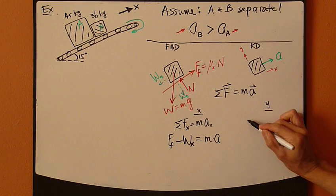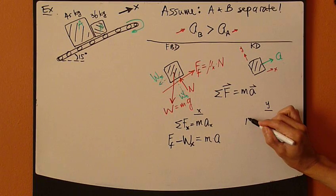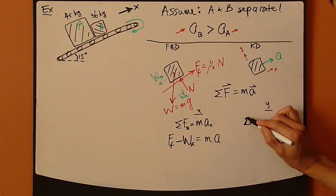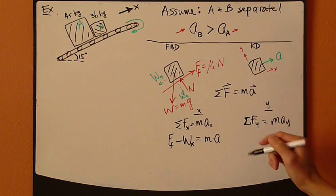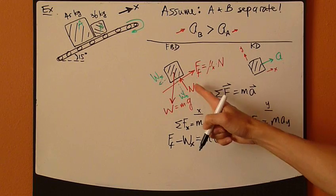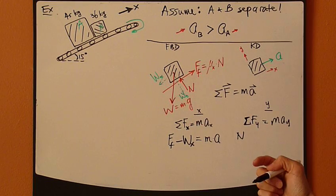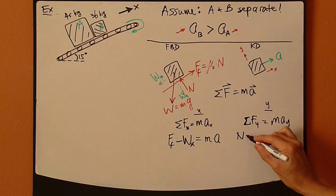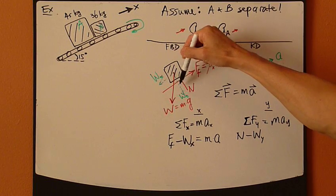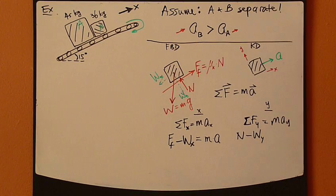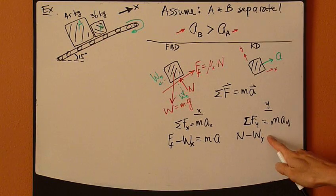So now we have normal force. Sum of forces y equals ma_y. So left-hand side, we have normal force in the positive y-direction. And what else? We have negative of w_y, this component right here. And that's all.